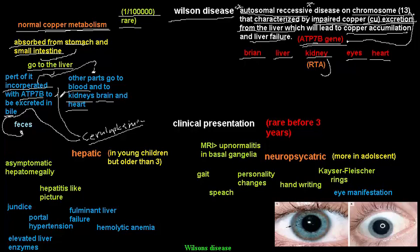Because of this defect in the ATP7B protein, copper that should have been excreted in bile and feces is no longer excreted. This leads to copper accumulation in the liver. The accumulated copper causes oxidative damage to hepatocytes, resulting in hepatitis and other hepatic complications.